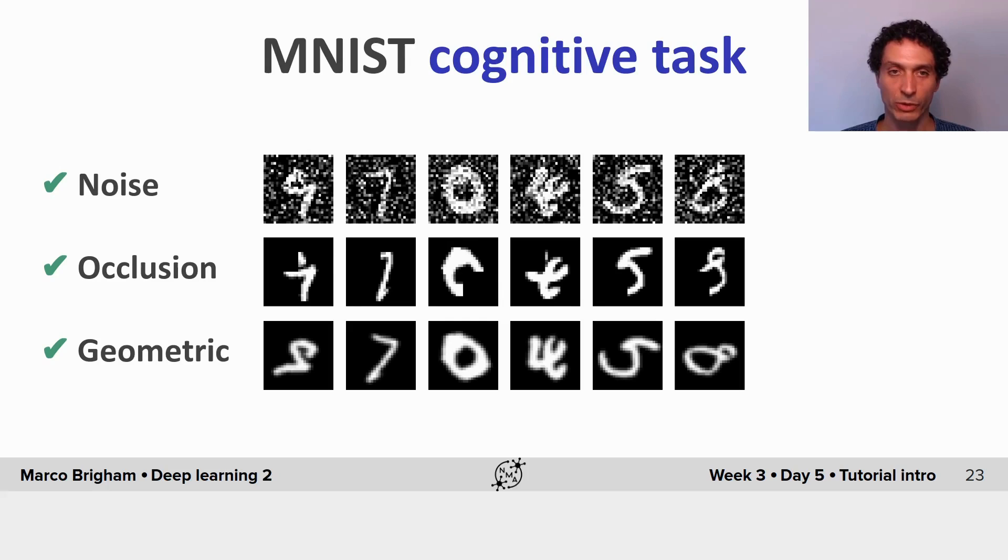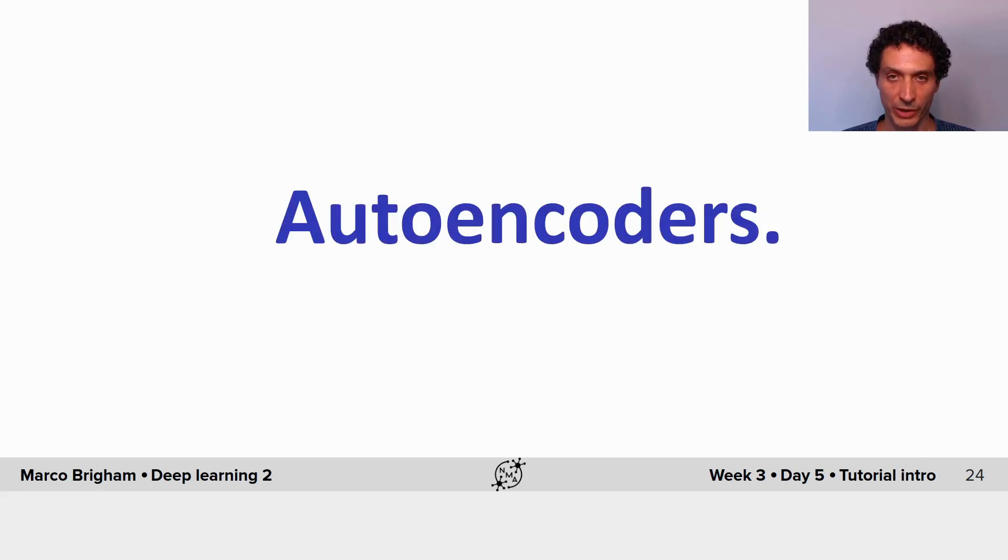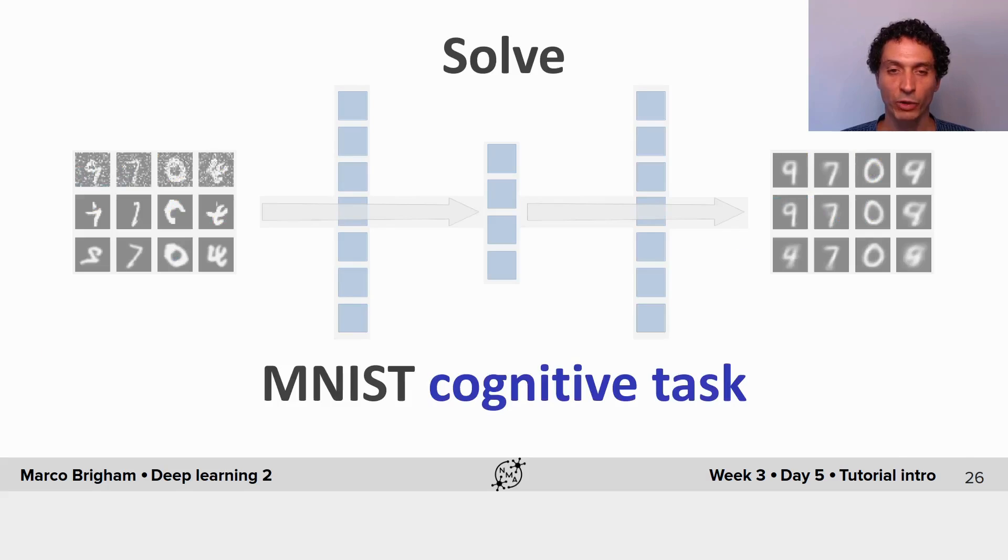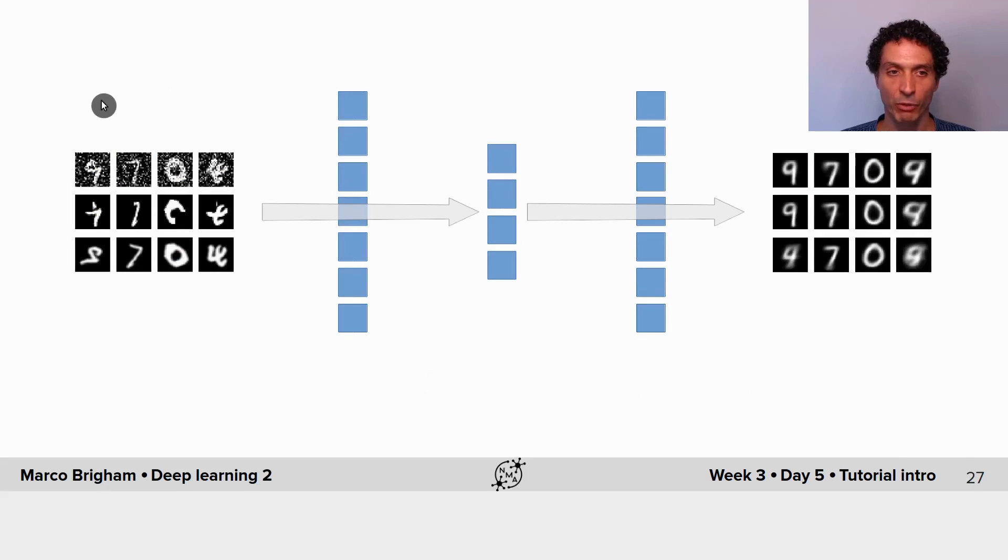We will not ask you to perform this cognitive task or ask your fellow POTS students to do it. Instead we'll use autoencoders that you'll learn more during the tutorials. But basically autoencoders are able to solve the MNIST cognitive task, in the sense that when provided with the modified images on the output after training, they are able to recover something that resembles the original images. I hope you enjoyed this tutorial. Thank you.